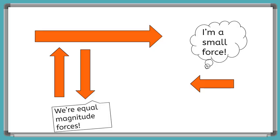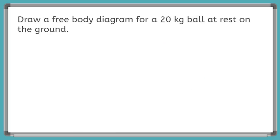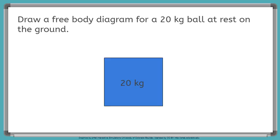Do you want to do an example? Draw a free body diagram for a 20 kilogram ball at rest on the ground. So the first thing we can do is draw our object. They told us a 20 kilogram ball, but since we draw all of our objects as a box, we can just go like this.